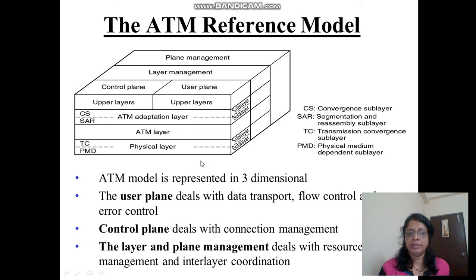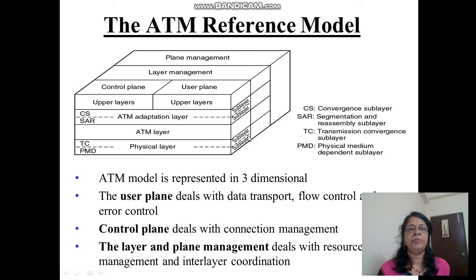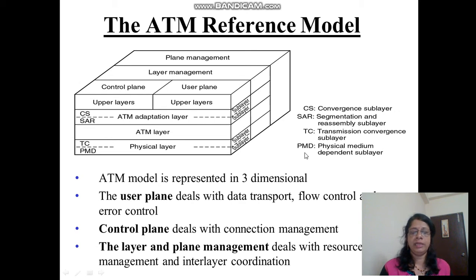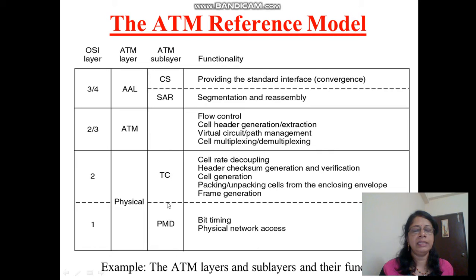The physical layer is divided into two sublayers: the PMD (Physical Medium Dependent) sublayer and the TC (Transmission Convergence) sublayer. The ATM Adaptation Layer is also divided into two parts: the CS (Convergence Sublayer) and the SAR (Segmentation and Reassembly) sublayer. In the next slide, I will explain the functionality of each layer. The physical layer, ATM layer, and AAL layer together form the ATM reference model.